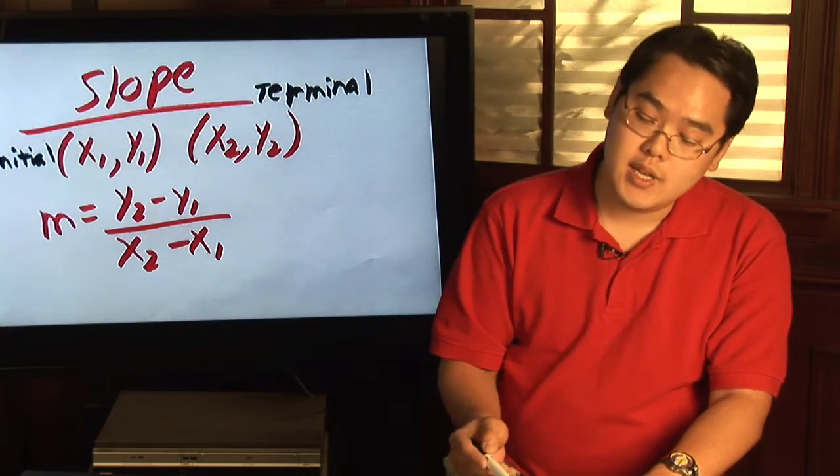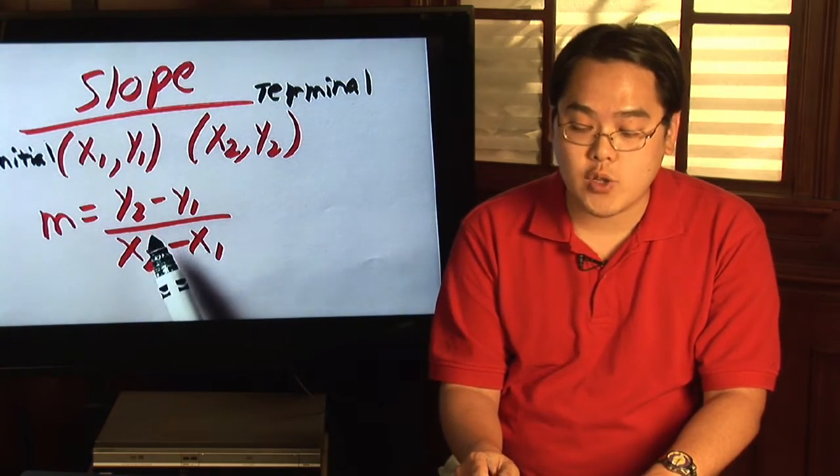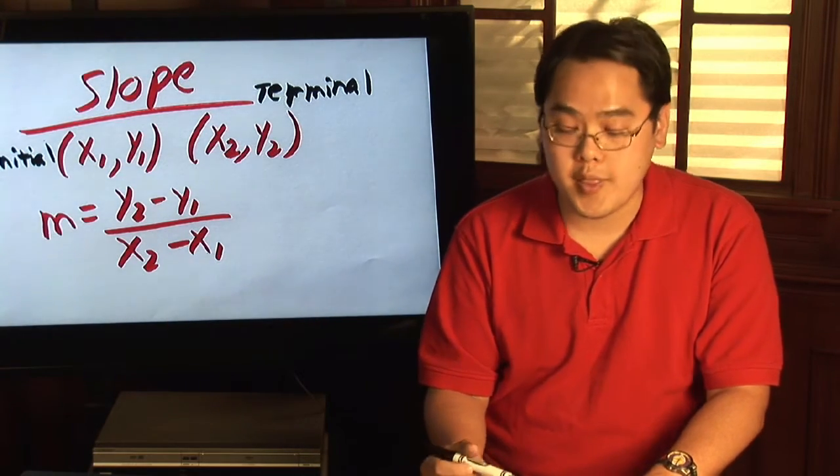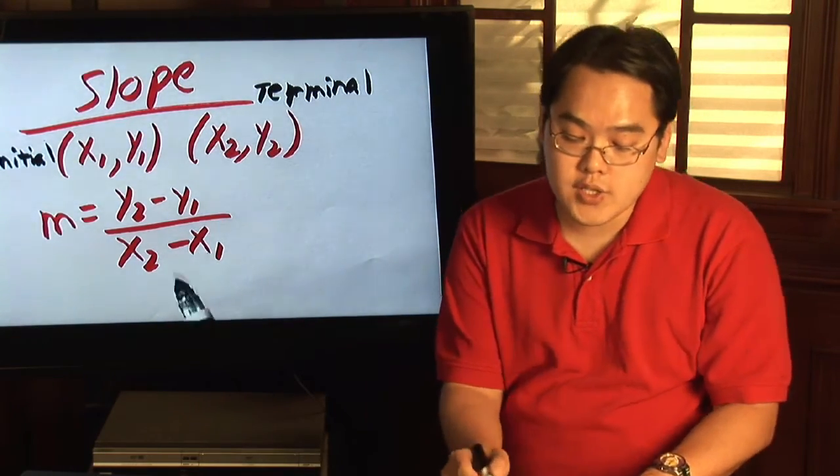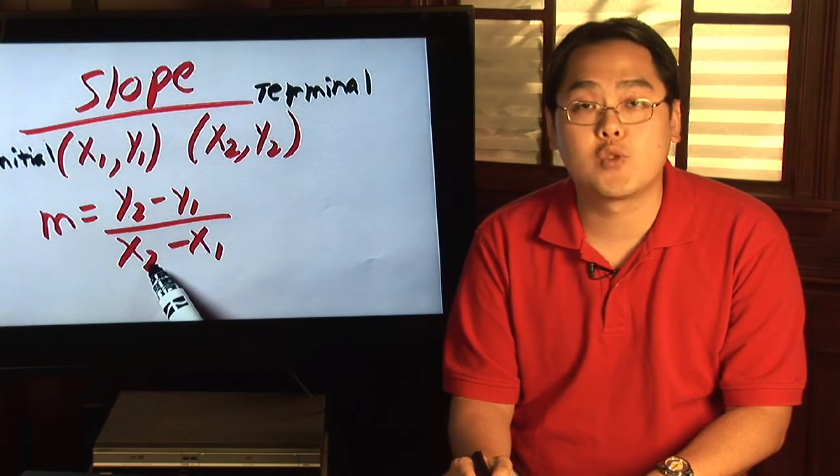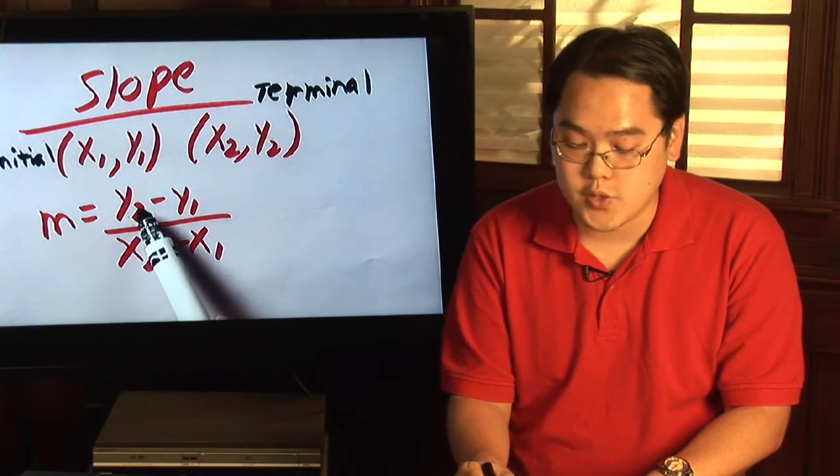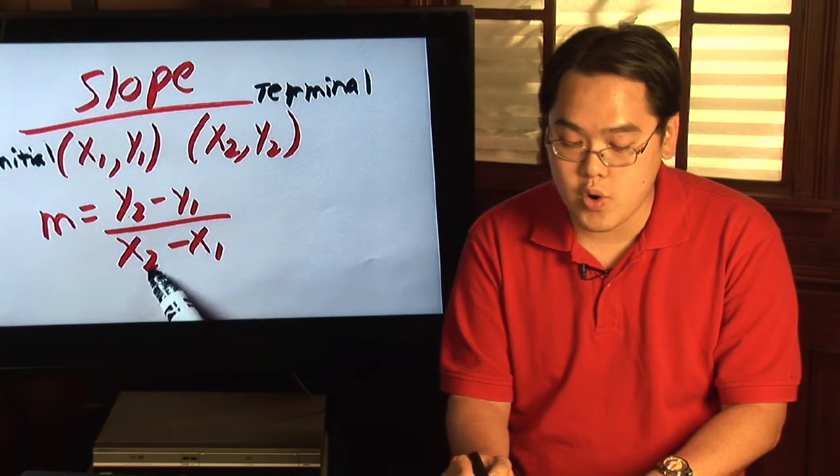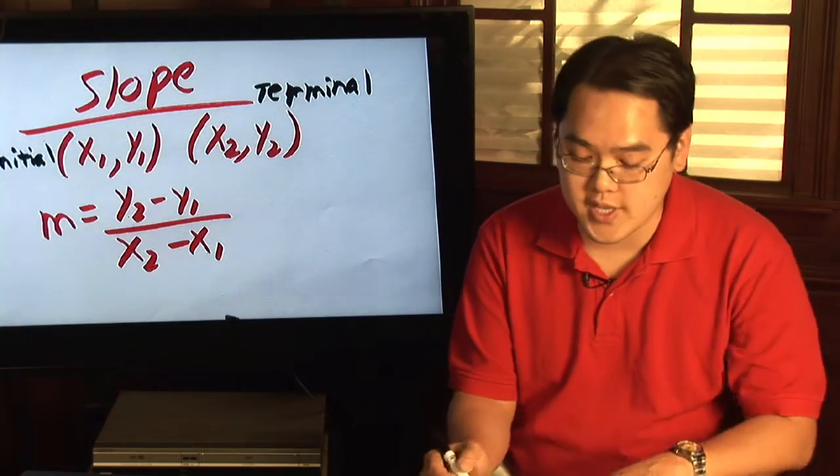Now the slope formula basically has you subtracting the y coordinates on top and the x coordinates on the bottom. But if you notice the twos, the coordinates representing the terminal point is the one mentioned first minus the initial. So it's the terminal coordinates minus the initial coordinates.